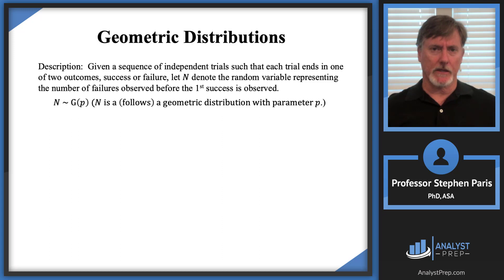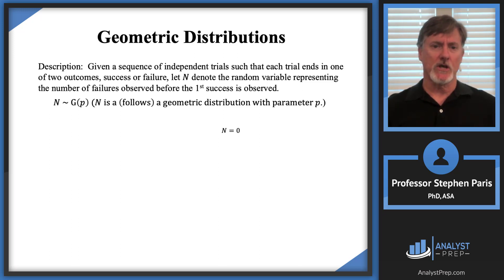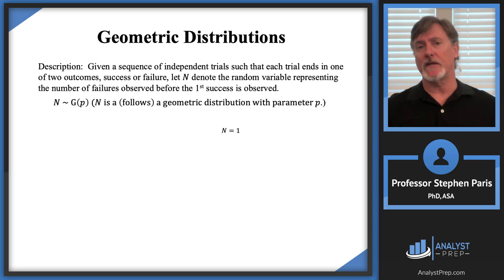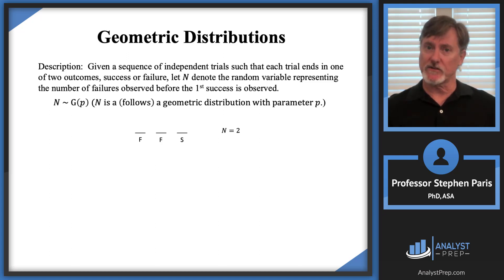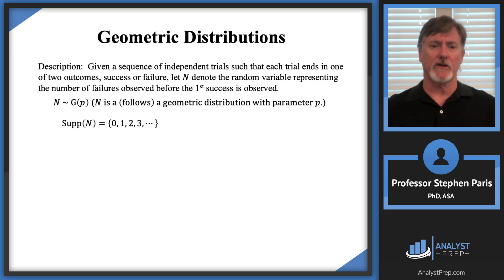Let's develop some intuition about this random variable N. What would N = 0 mean? N is counting the number of failures until we see the first success, so N = 0 means there were zero failures before the first success — in other words, the first trial ended in a success. Likewise, N = 1 means we saw one failure before the first success. N = 2 means failure, failure, then success. N = 3 means three failures and then success. So the support of N is 0, 1, 2, 3, and so forth.